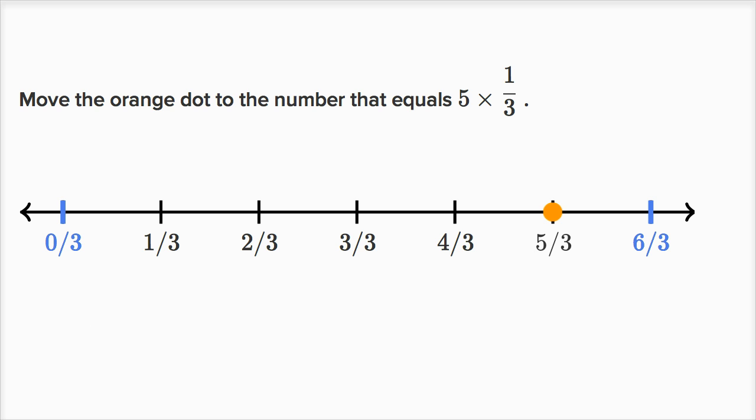Hopefully that makes some sense. Let's do some more examples here. So let's say we need to figure out, move the orange dot to the number that equals two times four-thirds.